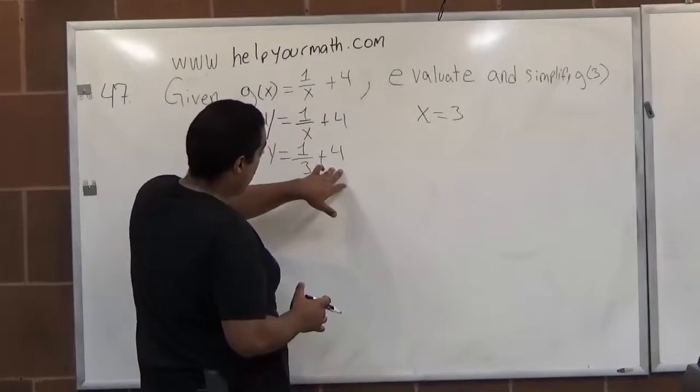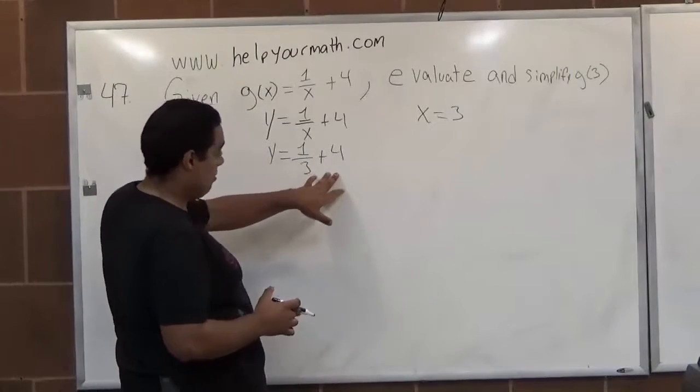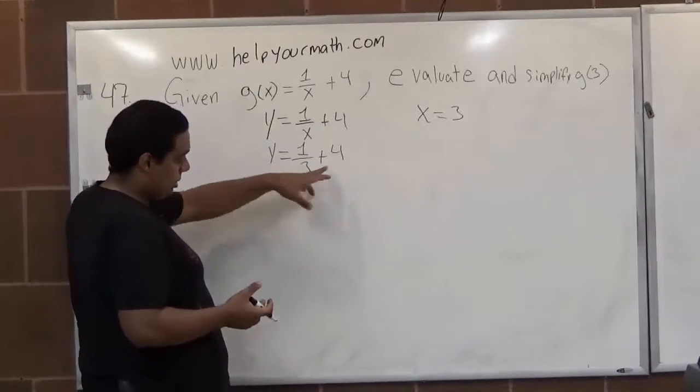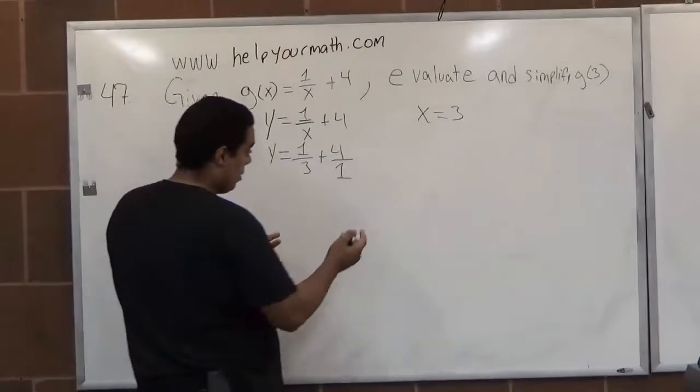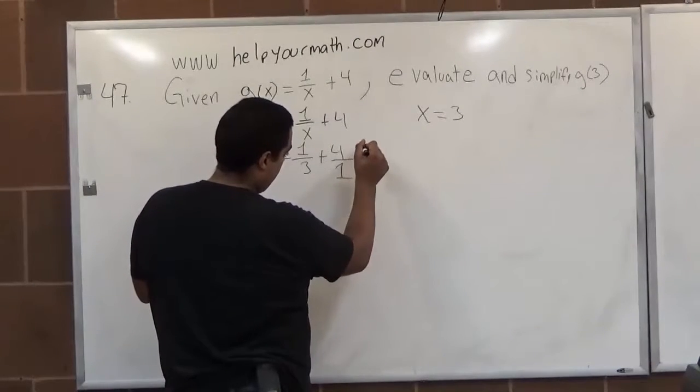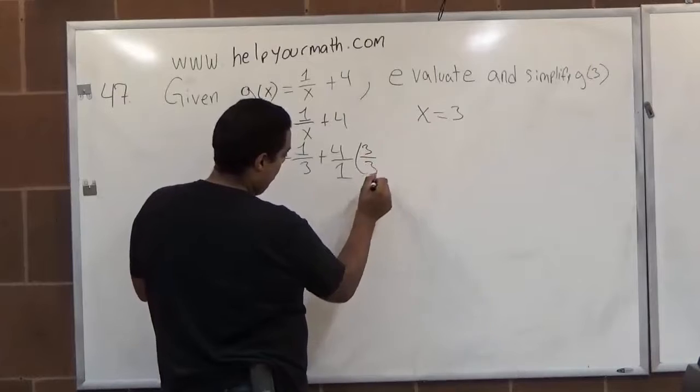So first we've got to find our lowest common denominator, which since this is essentially 4/1, for this it would be 3. So we multiply this one by 3/3,